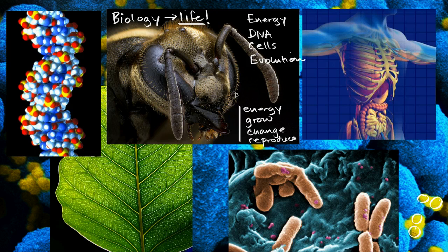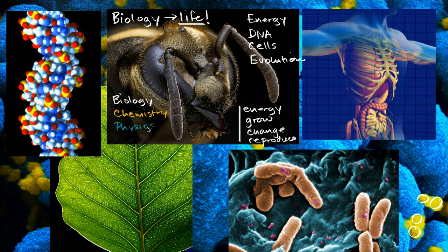So welcome to Khan Academy's biology section. I think you're going to find it fascinating. You're going to realize that biology is in some ways the most complex of the sciences, and in a lot of ways the one that we understand the least. It's going to be built on top of chemistry, which in turn is built on top of physics, which in turn is built on top of mathematics. And frankly, even in the last hundred years, we're just starting to scratch the surface of understanding it.